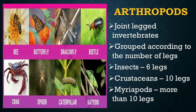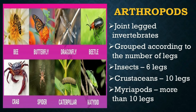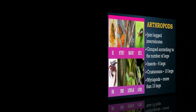Arthropods are joint-legged invertebrates that can be grouped according to the number of legs they have. Insects are arthropods that have 6 legs. Arachnids are arthropods that have 8 legs. Crustaceans are arthropods that have 10 legs. Myriapods are arthropods that have more than 10 legs. Among the arthropods are insects, arachnids, crustaceans, crabs, and ants.